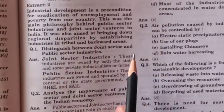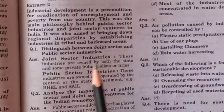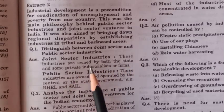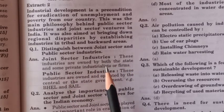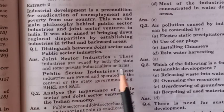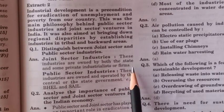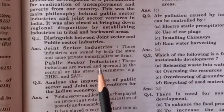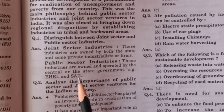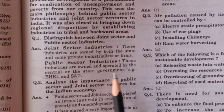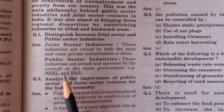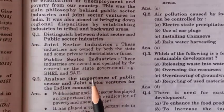Question: distinguish between the joint sector and public sector industry. Joint sector industries are owned by both the state and some private industrialists or firms — for example, Oil India Limited. Public sector industries are owned and operated by the central or the state government — for example, Bharat Heavy Electricals Limited (BHEL) and Steel Authority of India Limited (SAIL).